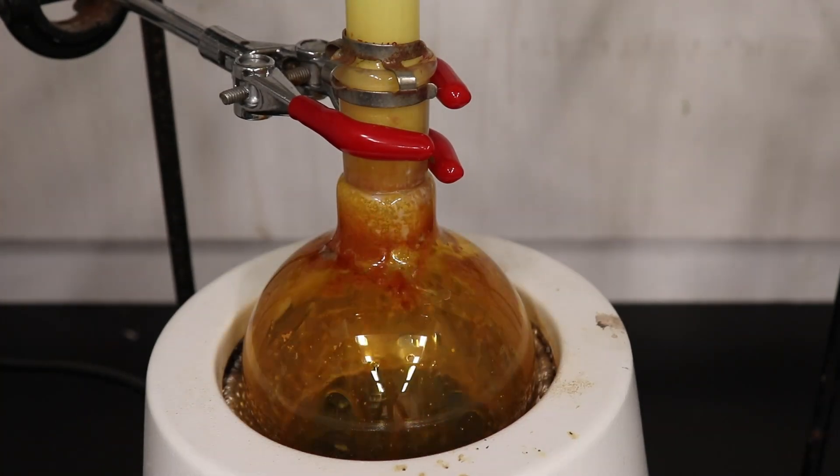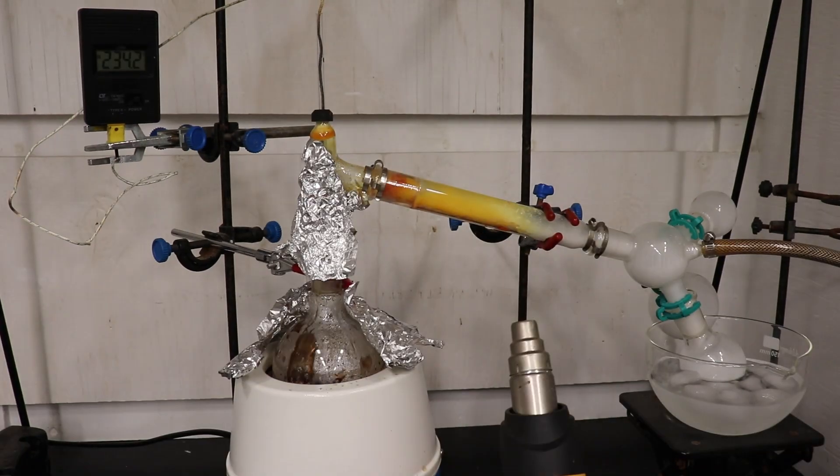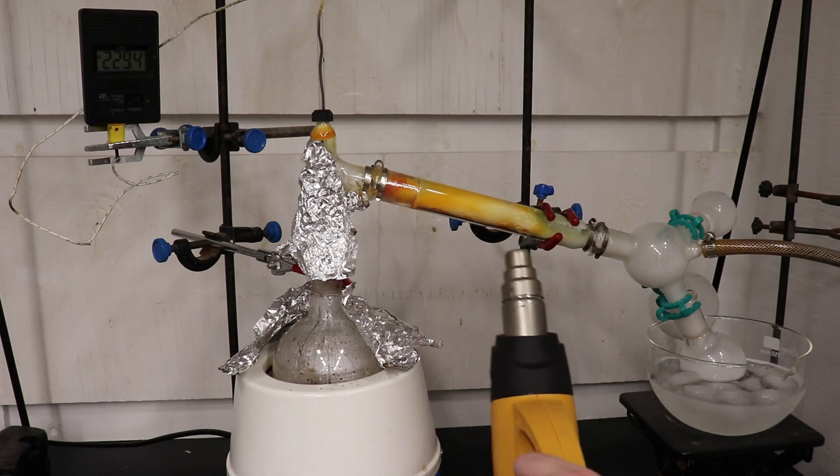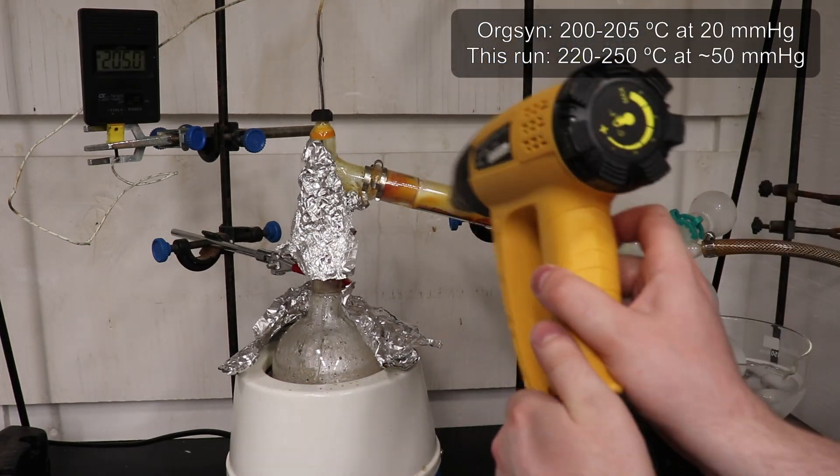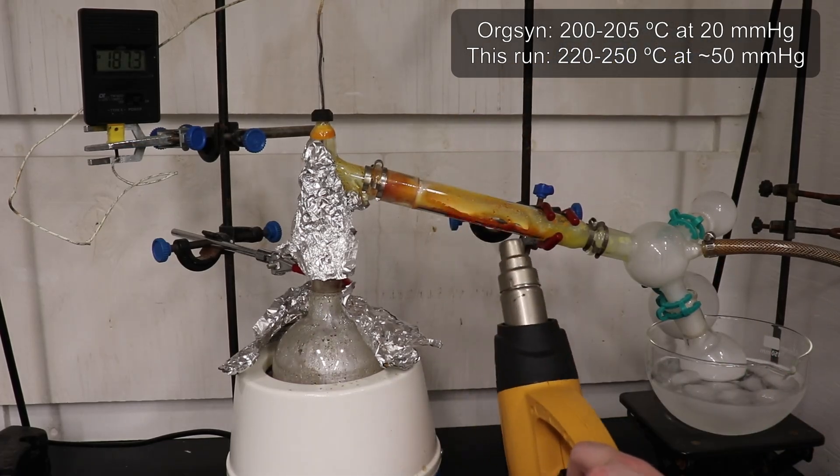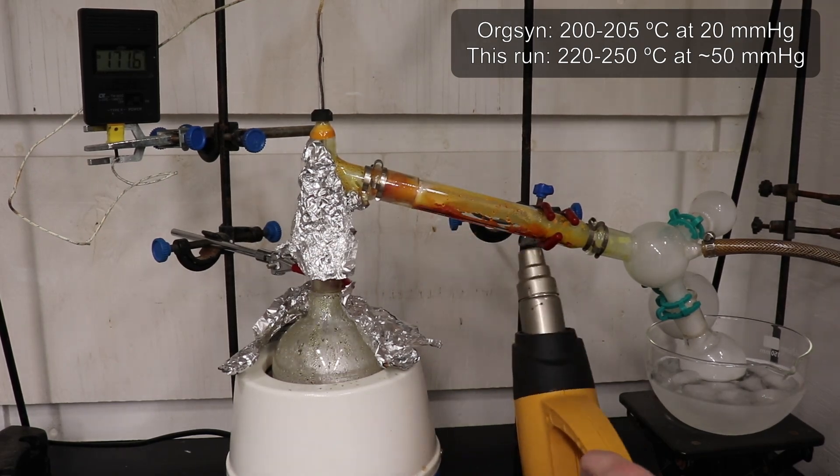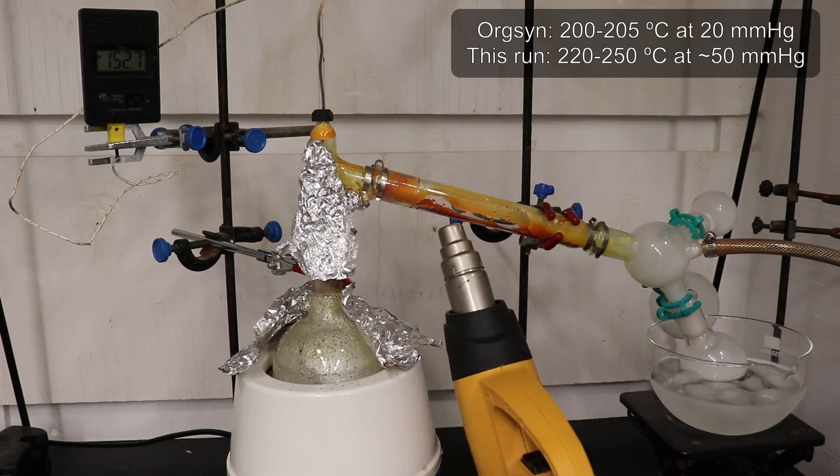The vacuum distillation is quite intensive, since 6-bromo-2-naphthol boils at a very high temperature even under vacuum. The Organic Syntheses paper ran its distillation at 20 mmHg and collected in the range of 200 to 205°C. However, my vacuum pump only went down to 50 mmHg, and I collected over 220 to 250°C.